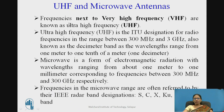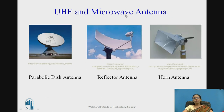UHF — ultra high frequency — has the frequency band designated by ITU as 300 megahertz to 3 gigahertz. Microwaves are a form of electromagnetic radiation with wavelengths ranging from 1 meter to 1 millimeter, corresponding to frequencies of 300 megahertz to 300 gigahertz. Microwave frequencies are referred to by IEEE radar bands such as S, C, Ku, and Ka bands. UHF and microwave antenna examples include parabolic dish antenna, reflector antenna, and horn antenna.